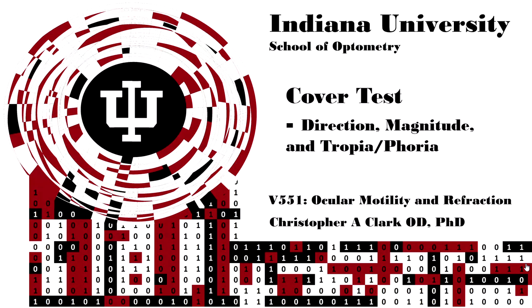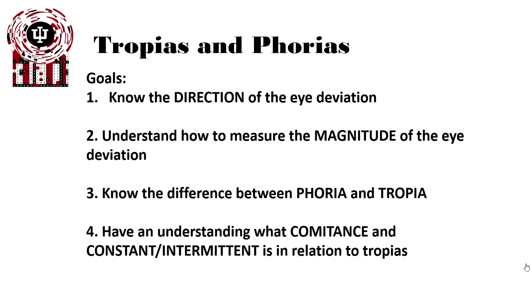This is Cover Test: directions, magnitude, and tropias, or ocular motility and refraction, V551. Today we're going to look at the types of deviations out there, the direction and the magnitude of those deviations, whether they're phorias or tropias, and understand a few basic terms that are oftentimes used to describe them. The point of today's lecture is just to show you examples of all these things, not show you how to measure them specifically or the finer details of how they interact with the patient.